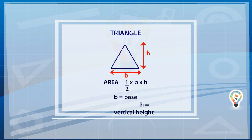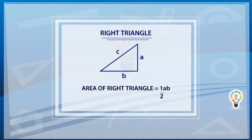The area of a triangle is half of the base times height. If B is the distance along the base and H is the height, then area of a triangle is half into B into H. Area of a right triangle is half of perpendicular times base.